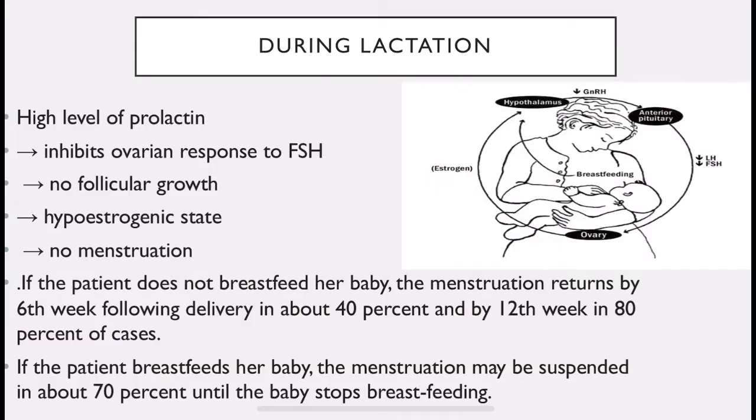During lactation, women have amenorrhea. The reason for this is a high level of prolactin, which inhibits the ovarian response to FSH.